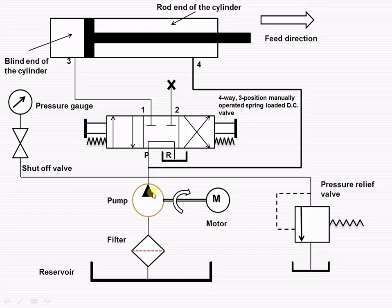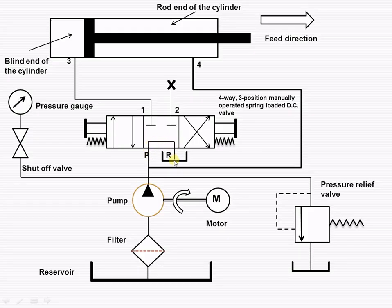In the given neutral or block position, from the reservoir, when the motor drives the pump, the fluid enters into the filter, gets filtered, is pumped by the pump, and goes to port P and then back to the reservoir. This is the neutral or block position — nothing will happen in this particular case.